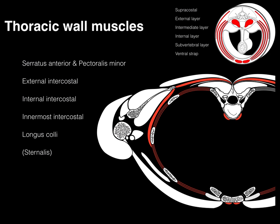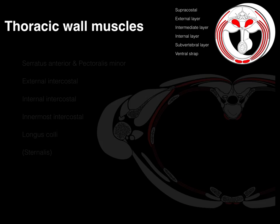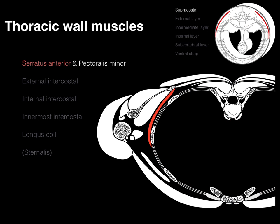Now there are all those highlighted muscles. We're going to take this pattern and apply it to this picture. The supracostal layer has the following two muscles: the serratus anterior, which attaches from ribs 1 through 8 to the medial margin of the scapula, and then we also have the pectoralis minor, which comes from ribs 3, 4, and 5 and goes to the coracoid process of the scapula.